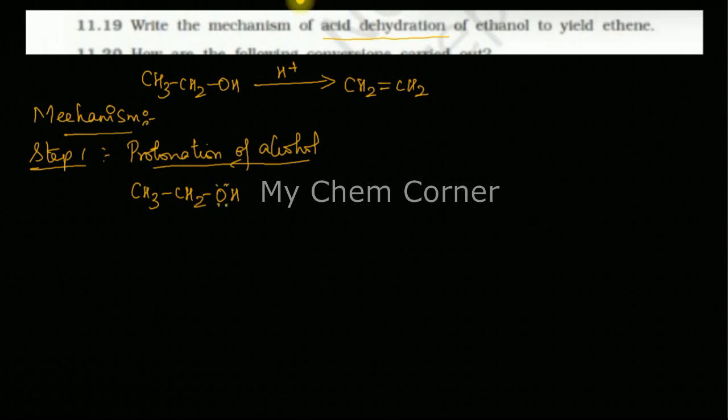I'm going to show the lone pairs because that's going to react. Now this is going to have a double headed arrow and it's going to react with H+. This particular reaction is a fast reaction. What happens in this case is the lone pairs, the free electrons of oxygen, will attack the positive center here. So it will bond to the hydrogen.